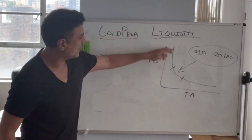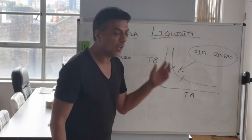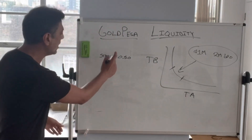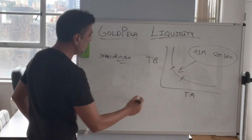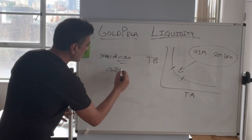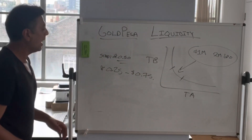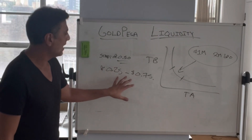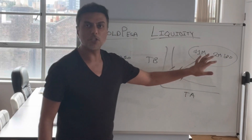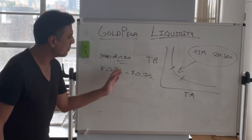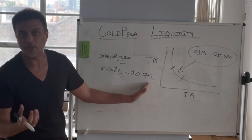Instead of placing it all the way on the price curve from zero to infinity, we can define that range and say, okay, we are starting our price at $0.50, we're going to put $1 million and 2 million GPO from $0.25 to $0.75. And what this means is that if the market buys up all 2 million GPOs, the price will move to the high end of this, which is $0.75, because your GPOs are there.